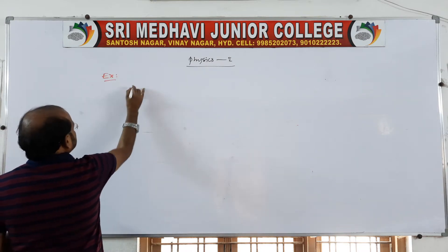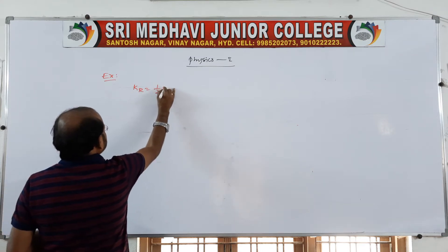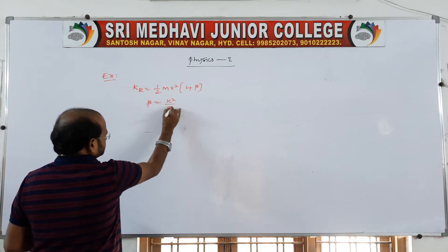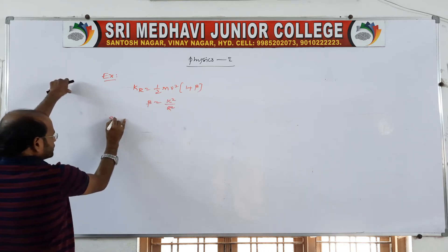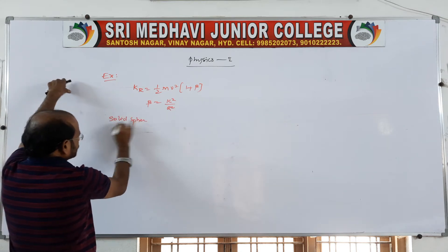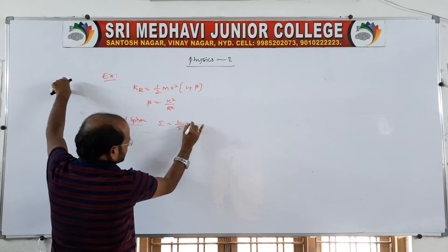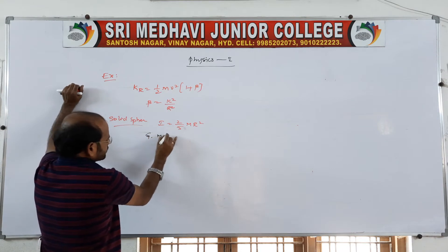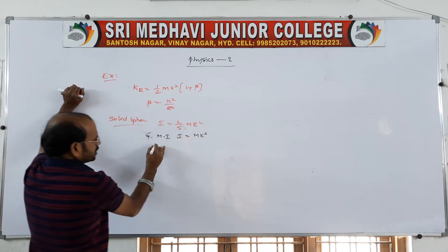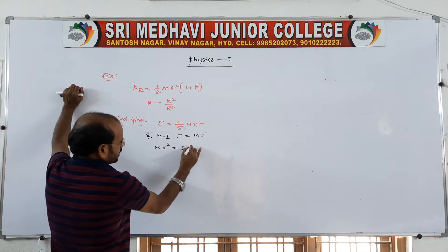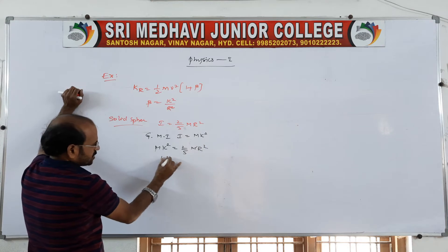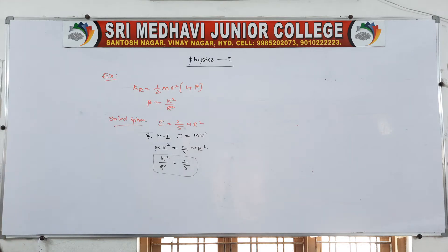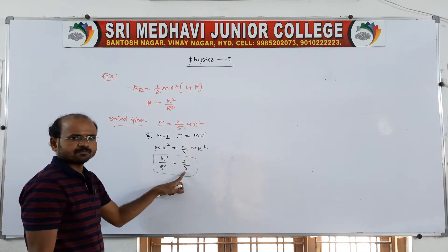For example three, K_rolling is equal to half m v squared of 1 plus beta, where beta is nothing but k squared by r squared. For a solid sphere, the moment of inertia is 2/5 mr squared. Writing the general moment of inertia as mk squared and equating: mk squared equals 2/5 mr squared.